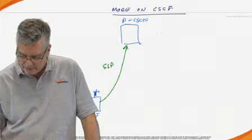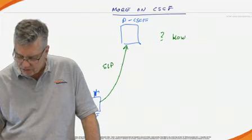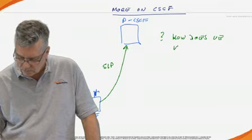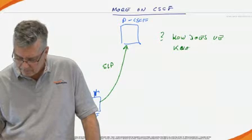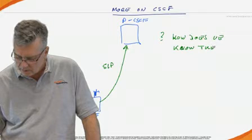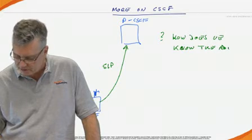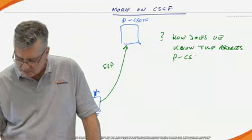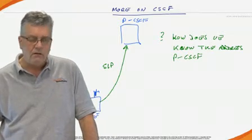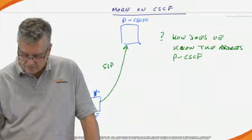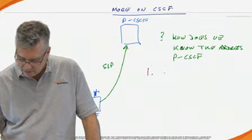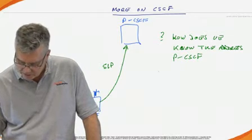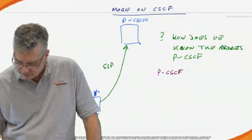So the question might be, how does the UE know the address or the IP address or the location of the proxy CSCF? There are really three methods by which this can be done and the terminology that's used is P-CSCF discovery.